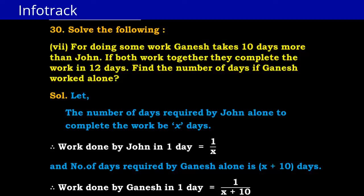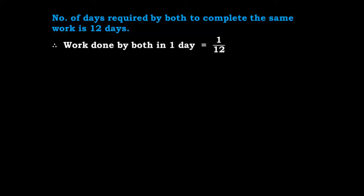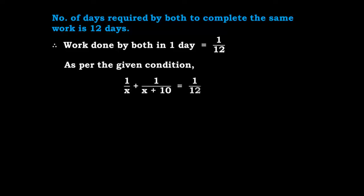They work together and complete the work in 12 days, so the work done by both in one day is 1/12. As per the given condition, we can form the equation: work done by John in one day is 1/X and by Ganesh 1/(X + 10), and together they do 1/12 work. So 1/X + 1/(X + 10) = 1/12.